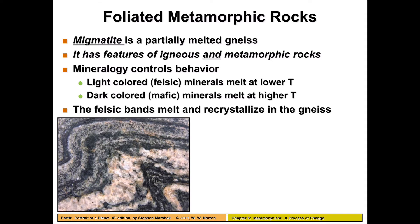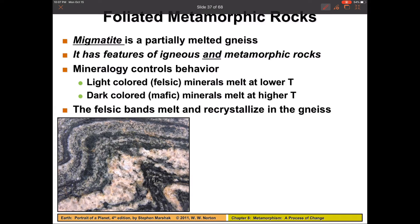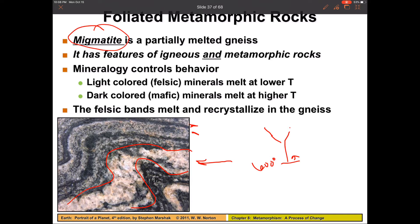If we took that gneiss and continued to expose it to higher pressures and temperatures, our felsic minerals would begin to melt, as you can see in this picture. You've got mafic bands and felsic bands, and then a giant blobby-looking band where the felsic material clearly melted. That tells me we've surpassed the 600-degree range in Bowen's series. This rock is what we call migmatite — migmatite is literally half igneous and half metamorphic, because there is some melt that formed in there. If we continued to bury this rock and expose it to even higher temperatures, of course everything would melt.